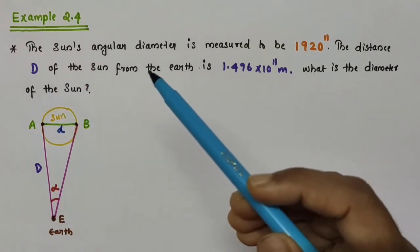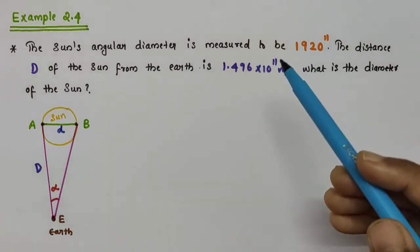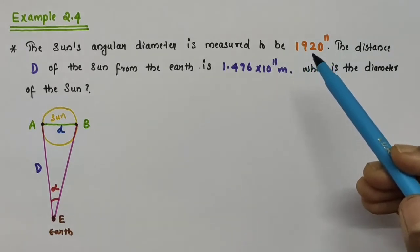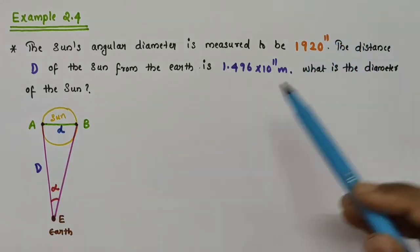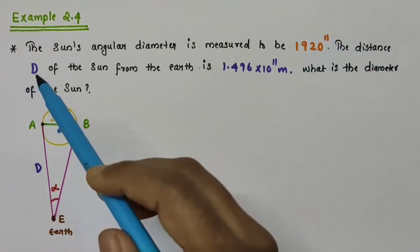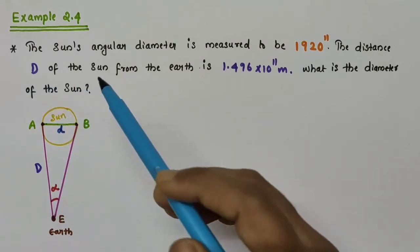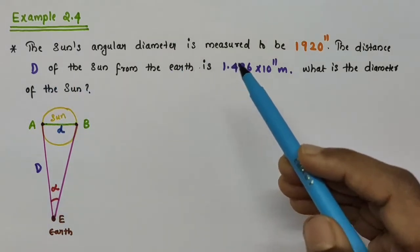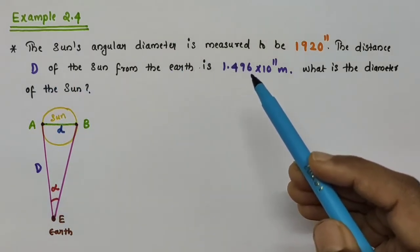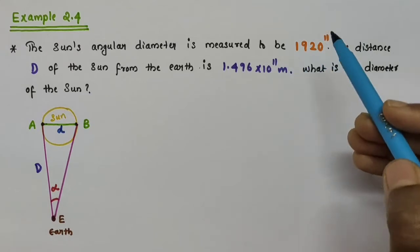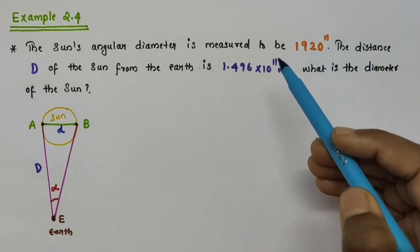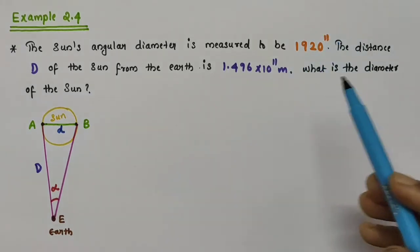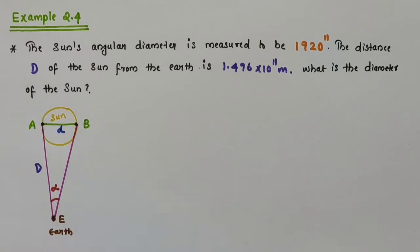The sun's angular diameter is measured to be 1920 arc seconds. The distance D of the sun from the earth is 1.496 × 10¹¹ meters. What is the diameter of the sun? That is the question.